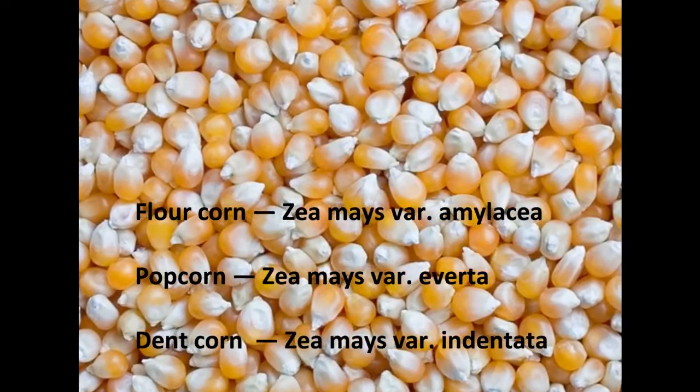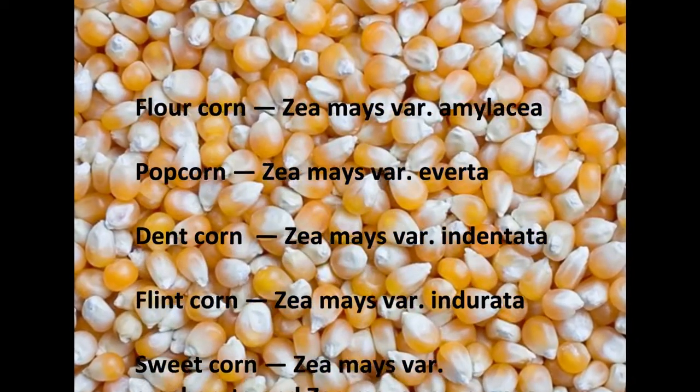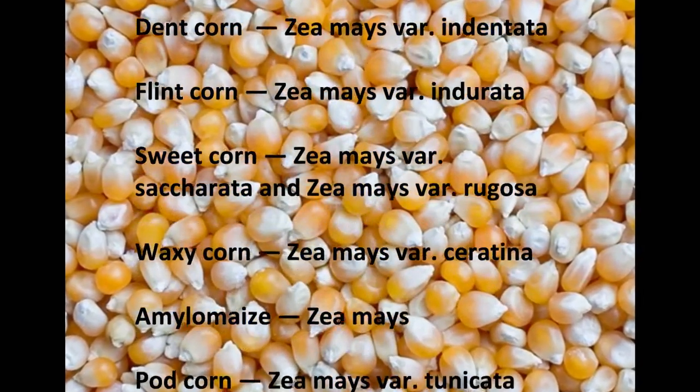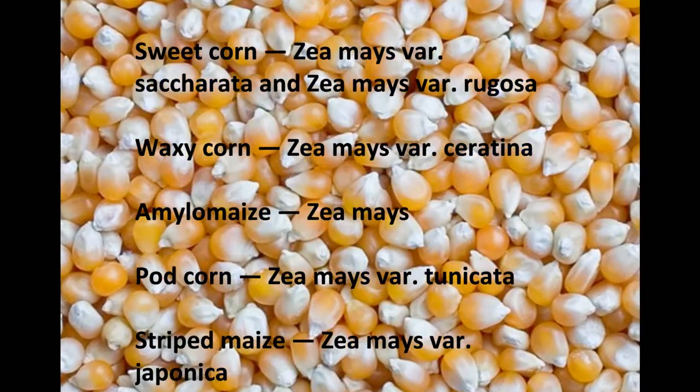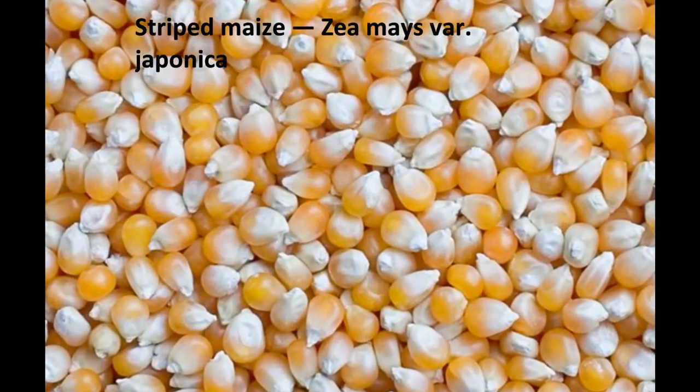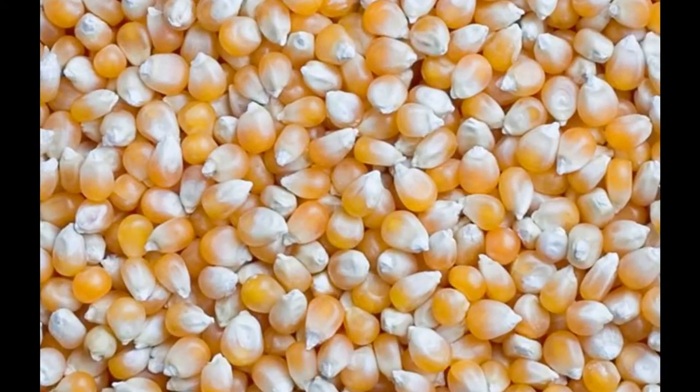The different types of corn include flour corn, popcorn, dense corn, flint corn, sweet corn, waxy corn, amylo maize, pot corn, and stripped maize.